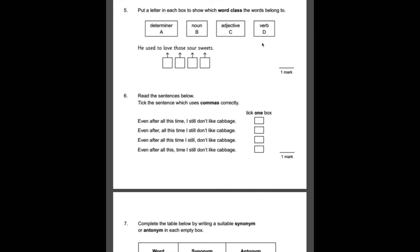Number five, put a letter in each box to show which word class the words belong to. With these ones, what I tend to do is look for the really obvious ones such as nouns, verbs, adjectives and then anything else that you're maybe not 100% sure on can go in at the end. So the first one that gets my attention is sweets. Sweets are a noun. So we'll put B in there, cross that out. Sour is describing the sweets. So that is the adjective. It's describing the noun. Love is the verb and therefore those must be the determiner. It's quantifying the noun here.